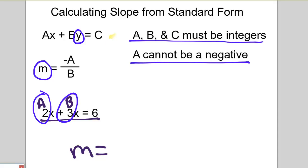And according to the formula up here, we're going to take the opposite of A. So A is 2, so the opposite is negative 2 over B, and B is 3. And you can see we have the same slope as we've had before. I've been using the same equation throughout. So the slope here is negative 2 thirds.